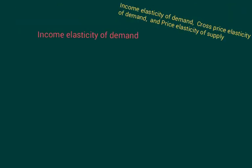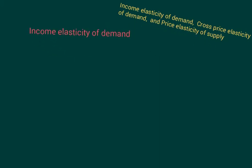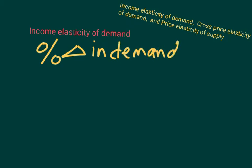So let's start with income elasticity of demand. Price elasticity of demand was the percentage change in the quantity demanded divided by the percentage change in the price. So income elasticity of demand is going to be the percentage change in the demand — the amount purchased. That part is the same, except with price it was quantity demanded; here it's really demand. It's the same idea.